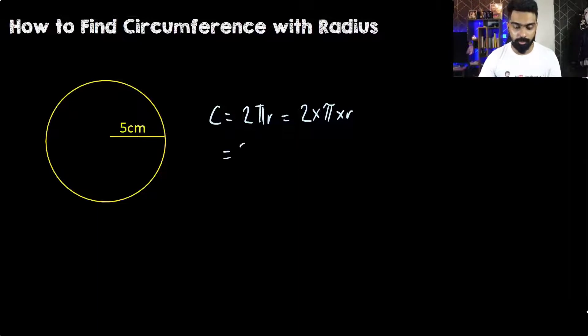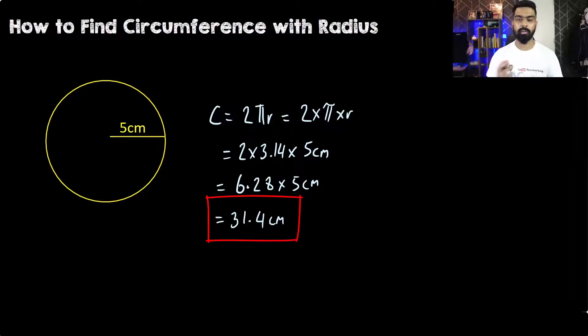So what we have here is 2 multiplied with 3.14, multiplied with the radius which in this case is 5 cm. 2 times 3.14 is 6.28, multiplied with 5 cm equals 31.4 cm. So the circumference in this question is 31.4 cm.